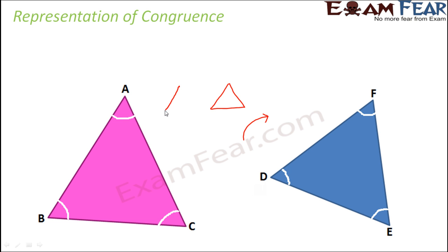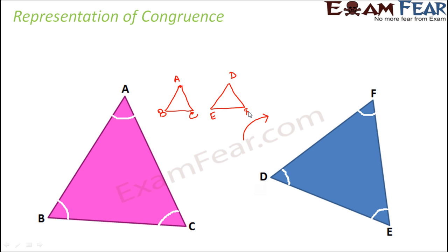Maybe you rotate it in this fashion such that the triangle is in this pattern. Let's say if this is ABC, when you rotate it in an orientation like this — DEF. So only then you see that the two triangles exactly cover each other.